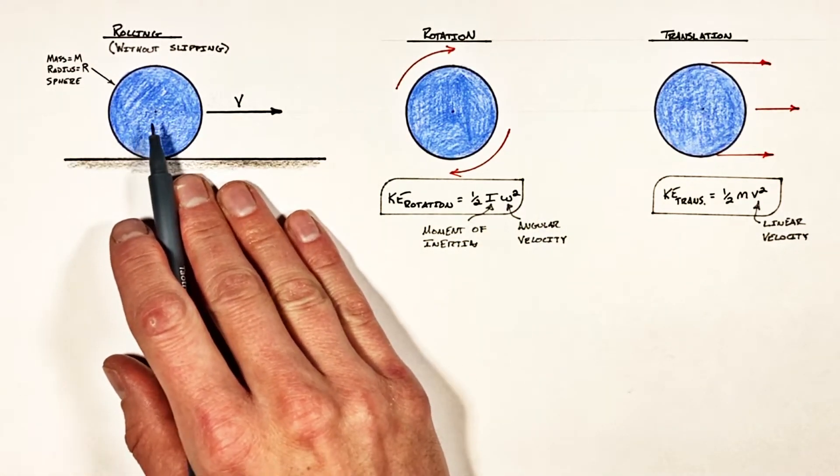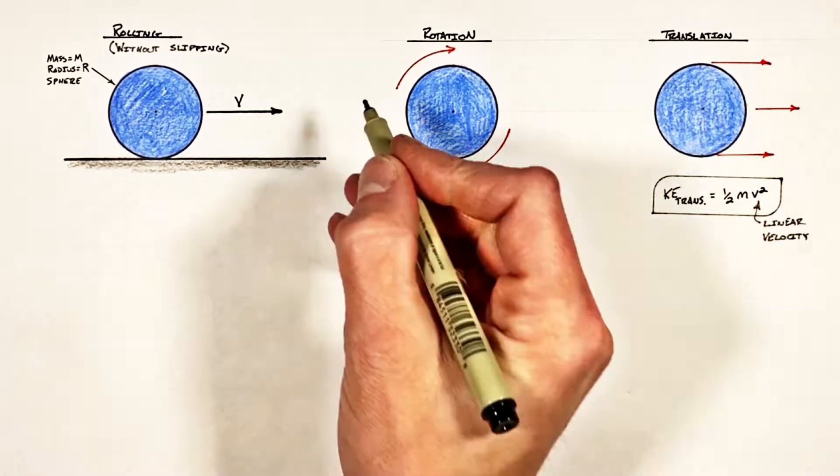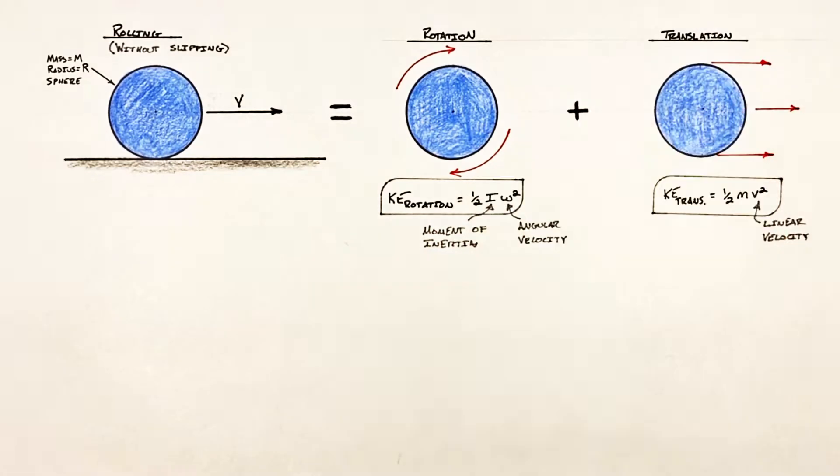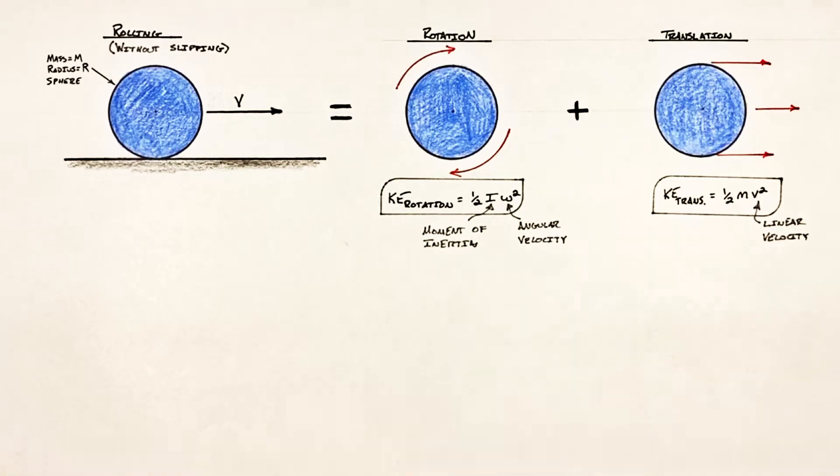Now going back to a rolling object, if rolling is nothing other than the summation of rotation and translation, then the kinetic energy of a rolling object is going to be the sum of these two kinetic energies.